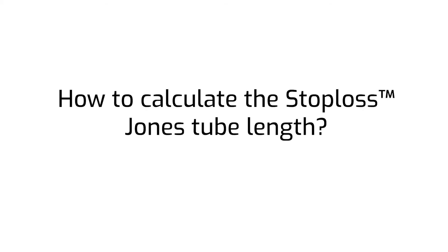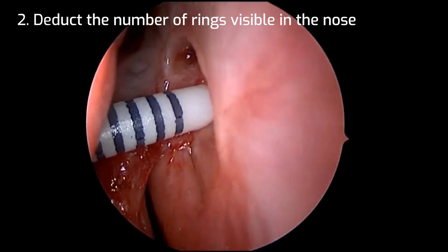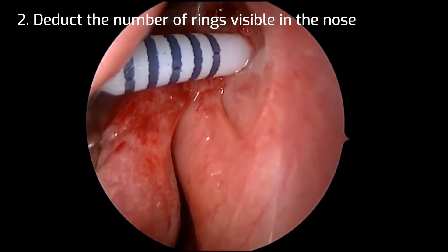In order to calculate the optimal tube length, this calculation should be followed. Take the known dummy tube length that was used, either 15 or 20 millimeters, and deduct the number of rings visible in the nose.